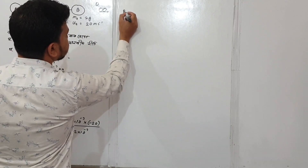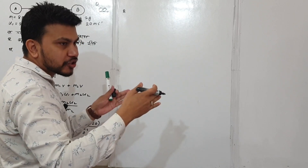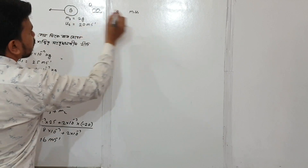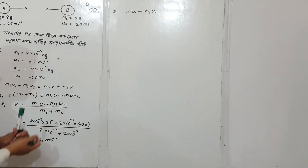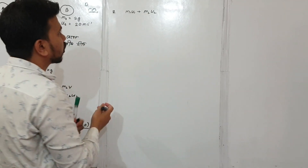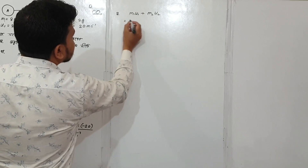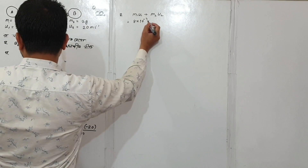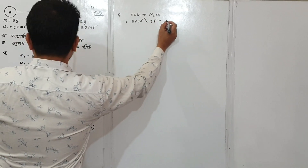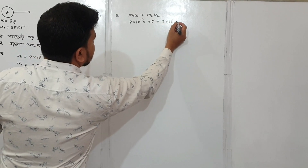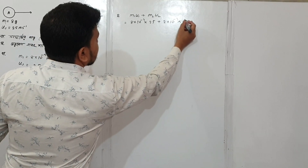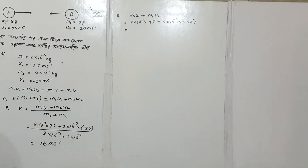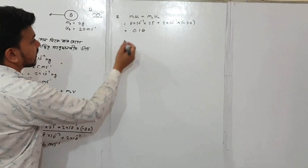We apply m1u1: m1 = 10⁻³ into u1 = 25, plus m2 = 2 × 10⁻³ into u2 = -20. Computing this gives us the total momentum, leading to an energy result.